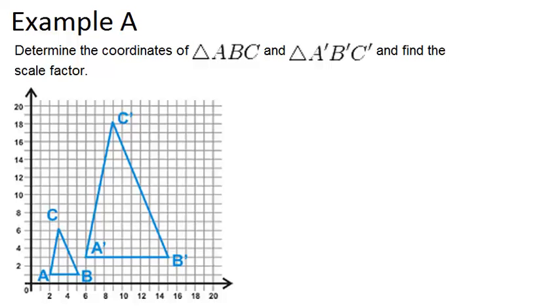So I see two triangles there, and I notice that triangle A'B'C' is the bigger triangle. What that means is that the scale factor has to be greater than 1 because the shape has gotten bigger after the dilation. So let's figure out those coordinates.